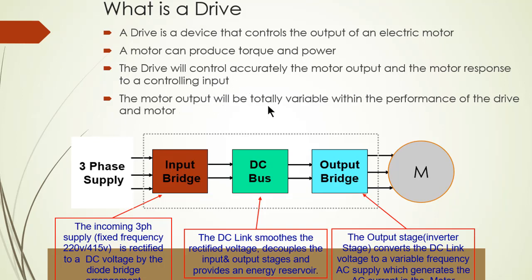The motor output will be totally variable within the performance of the drive and motor. Let us consider the three-phase supply. There is the input bridge section, another section is the DC bus, and another section is the output bridge. The incoming three-phase supply has a fixed frequency — that means 20 Hz, 25 Hz, or any kind of frequency.